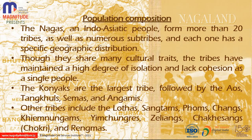There are some 20 tribes and numerous sub-tribes in Nagaland, each with a specific geographical distribution. They share many cultural traits but lack cohesion as a single people. The Konyak is the largest tribe; the Aos, Tankhuls, Semas, and Angamis are among the major tribes. Other tribes include Lothas, Sangtham, Phoms, Changs, Khiamniungan, Yimchungres, Zeliangs, Chakesangs, Chakhesang, and Rengmas.